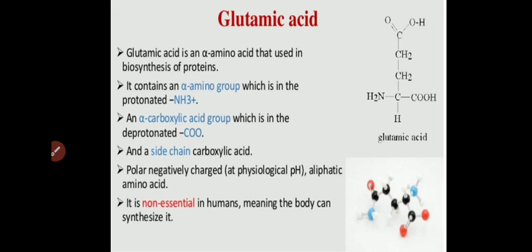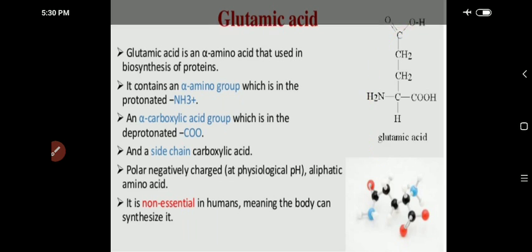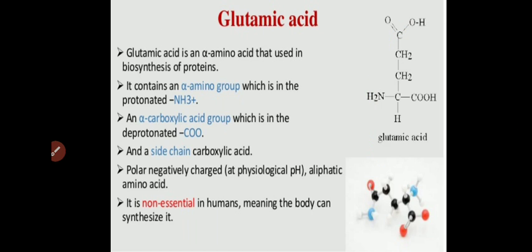If we study the structure of glutamic acid — as you can see in the diagram — it contains an alpha amino group which is protonated, and a carboxylic acid group is also present, as it is an acid. It is a polar and negatively charged alpha amino acid. Generally, it is non-essential in humans because glutamic acid can be synthesized inside the body.